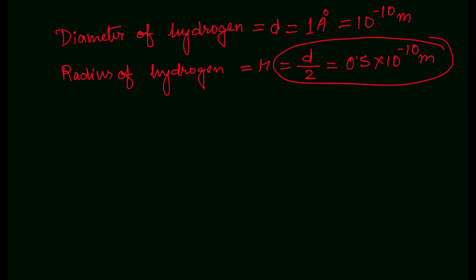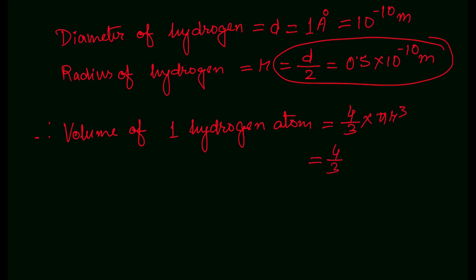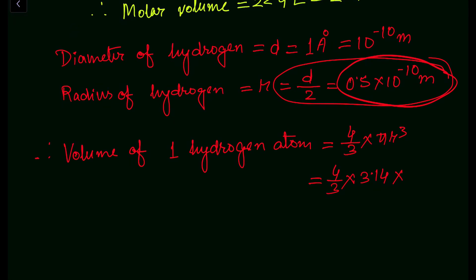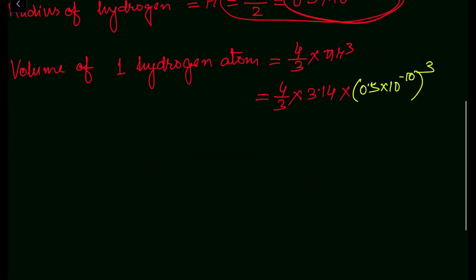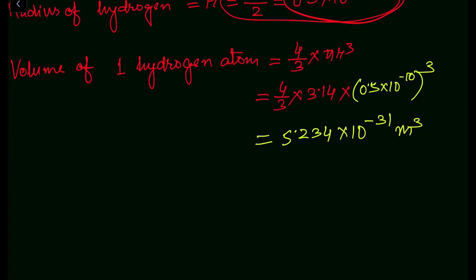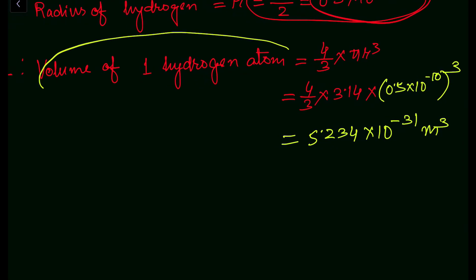Now we find the volume of a single hydrogen atom, assuming it to be spherical in shape. Using the formula V = 4/3 × π × r³, where π = 3.14 and r = 0.5 × 10⁻¹⁰ meter, if we multiply this out we get 5.234 × 10⁻³¹ meter cube. This is the volume of a single hydrogen atom, denoted as capital V.